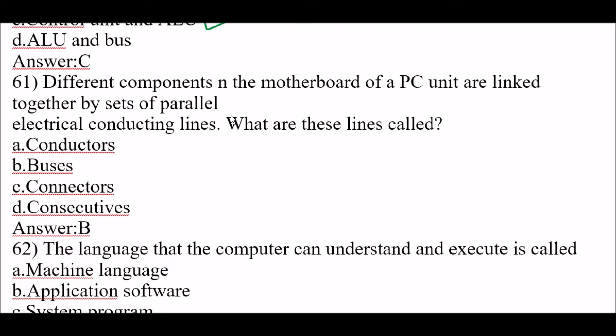Next question: different components of the motherboard of a PC unit are linked together by a set of parallel electrical conducting lines. What are these lines called? Option A: conductors. Option B: buses. Option C: connectors. Option D: consecutives. The right answer is option B, buses. These lines are called buses.